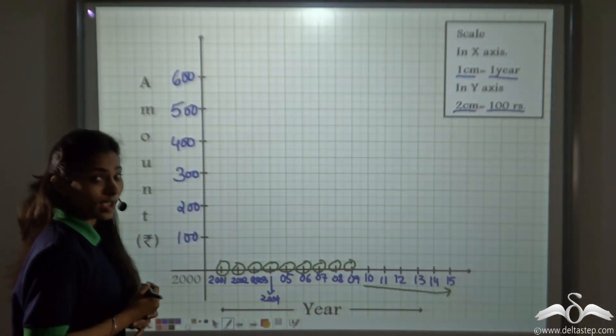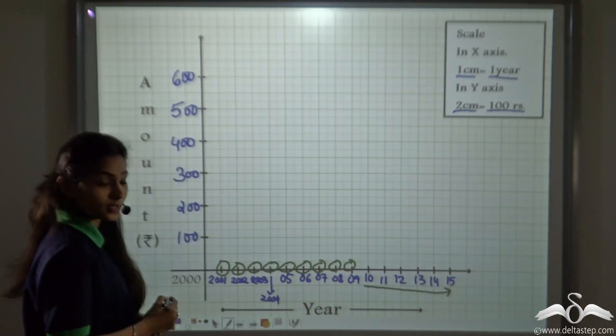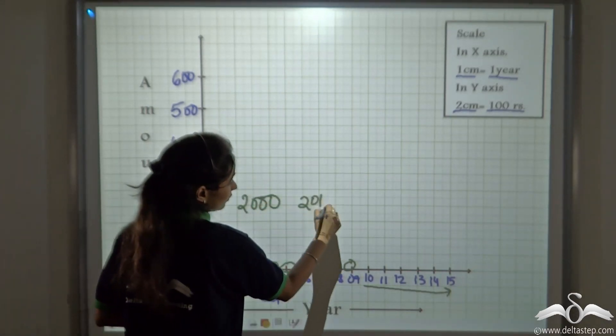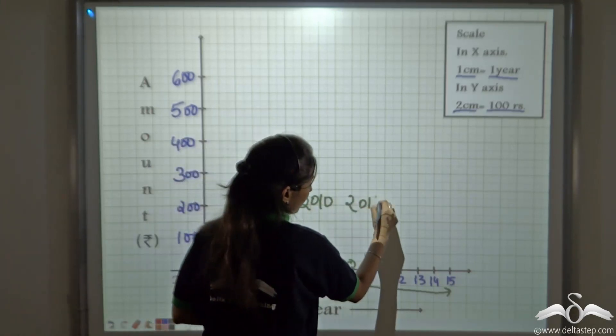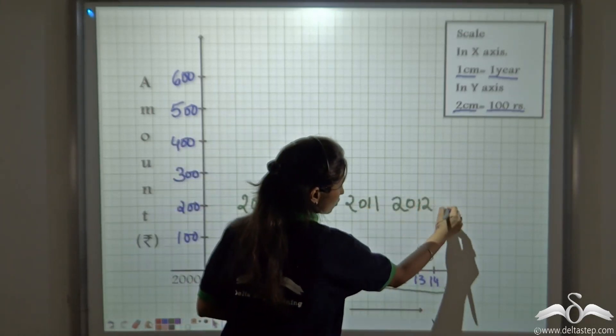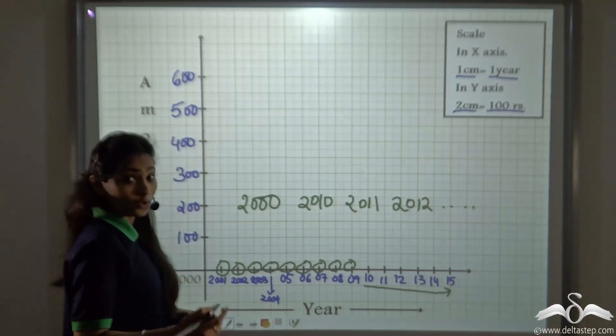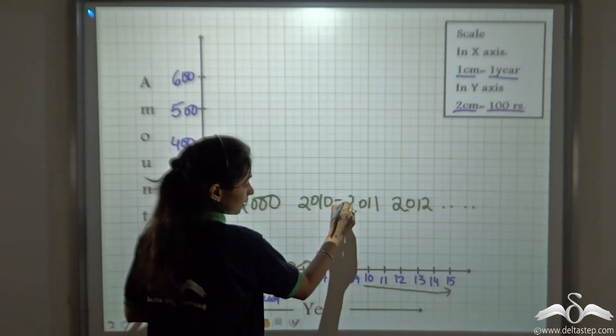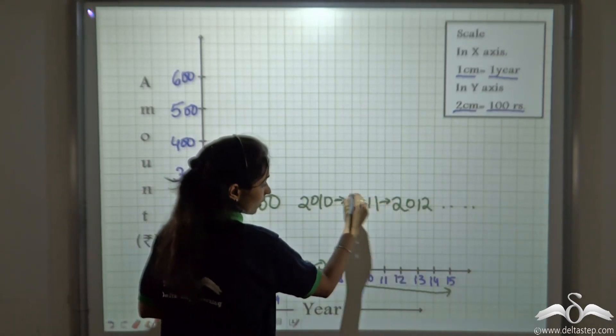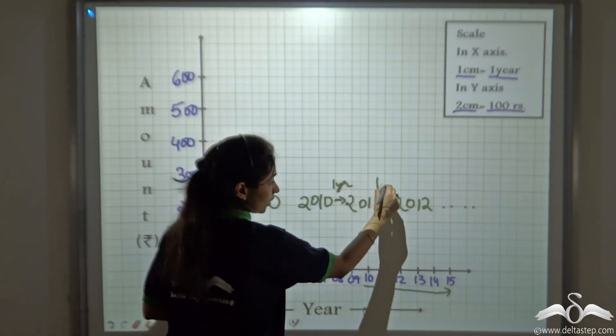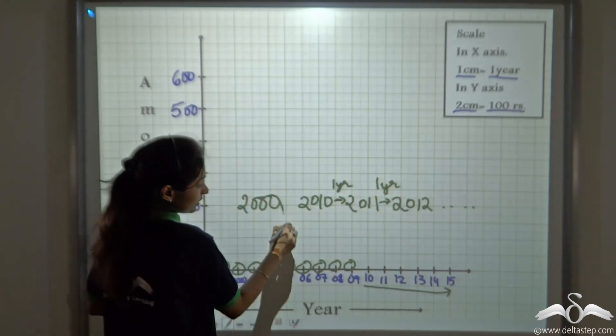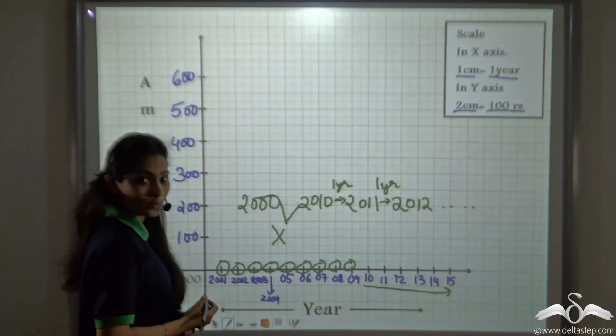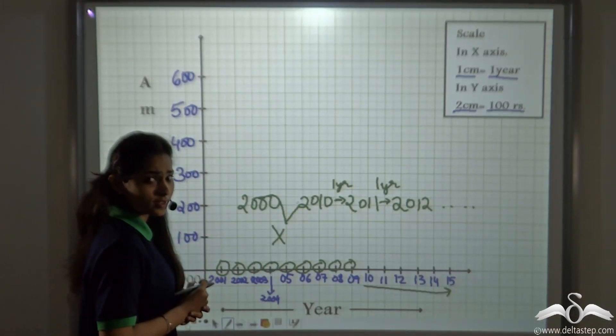Won't it be wrong as we have to keep the scale as equidistant? We could do like 2000 and then start it directly from 2010, 2011, 2012 and so on. But then it will not be equidistant and it is important to keep the scale equidistant. Here you can see that this is equidistant as there is a gap of one year only. But this is not equidistant as there is a gap of nine years in between. So can we do something for this?